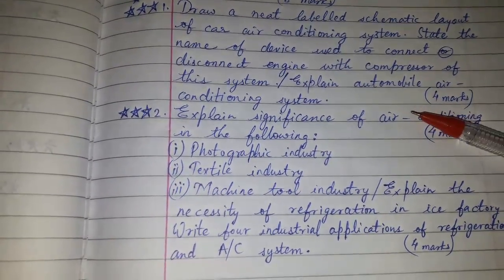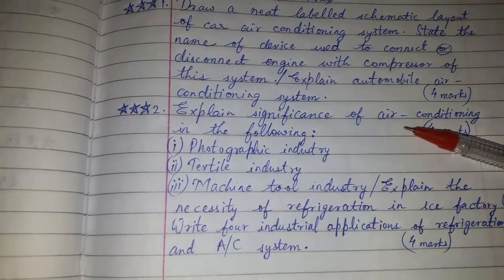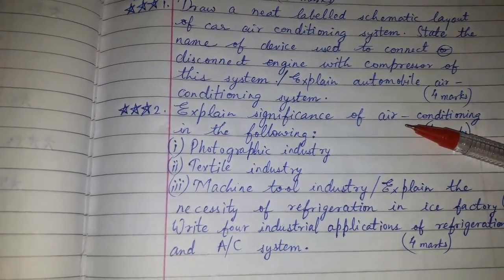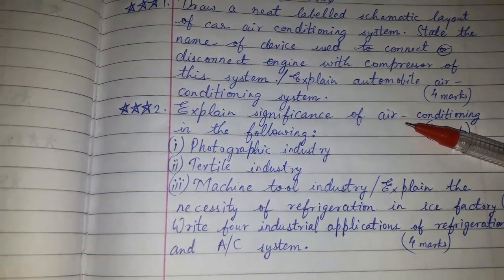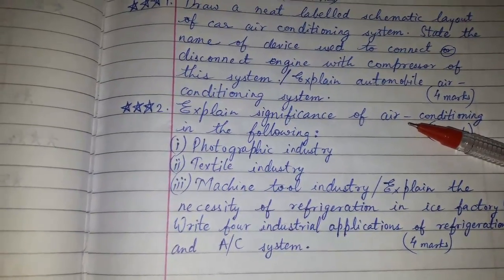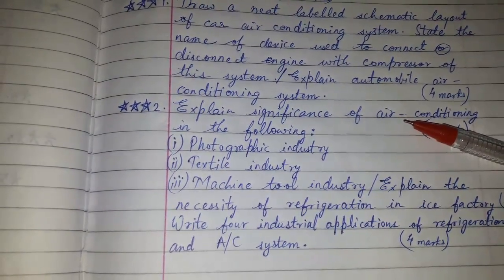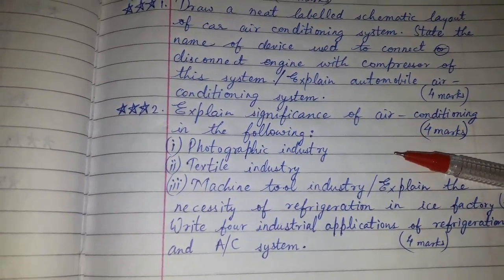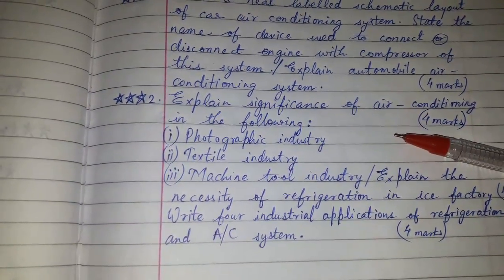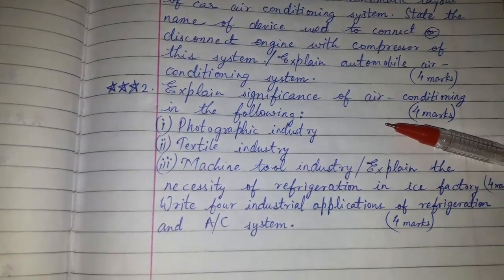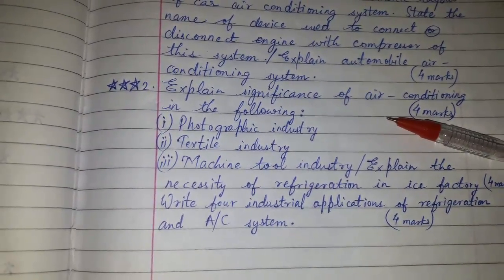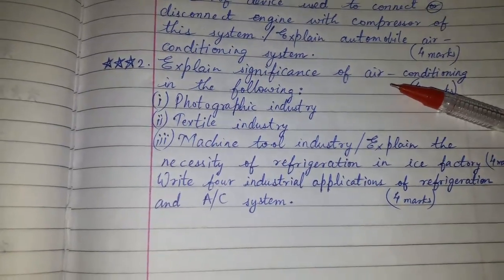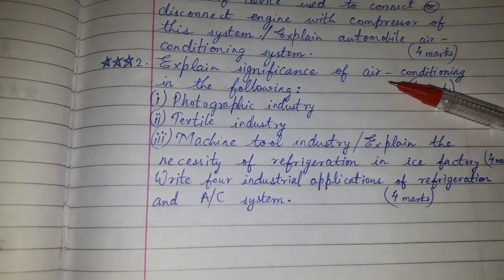Question number two: explain the significance of air conditioning in the following — photographic industry, textile industry, machine tool industry — for four marks. Or it may be asked: explain the necessity of refrigeration in an ice factory for four marks. Or it can be asked: write the industrial applications of refrigeration and AC system.